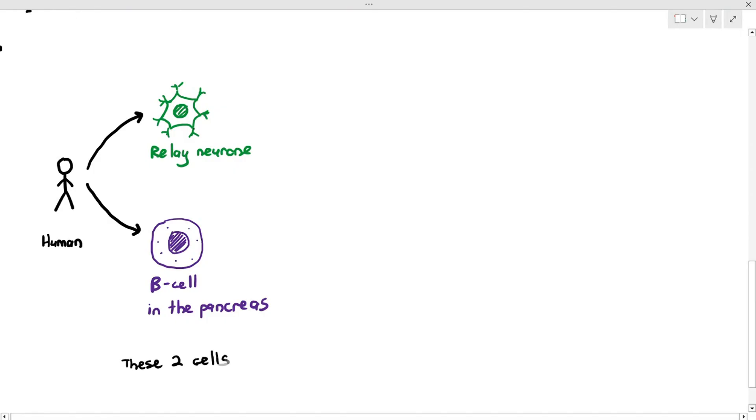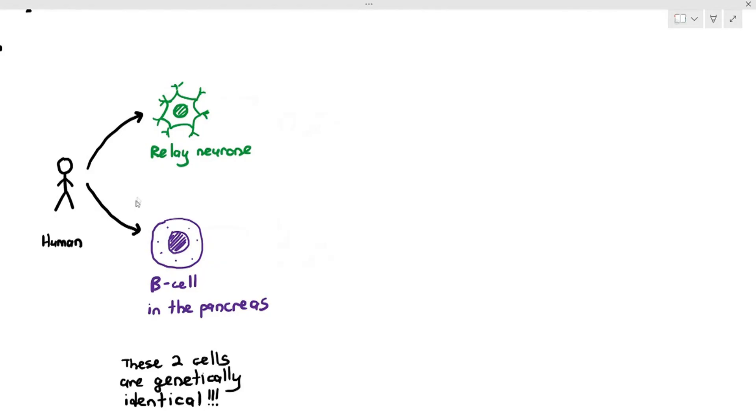But here's the thing, they are actually identical to each other. These two cells are genetically identical, which means to say any genes that are found in the relay neuron are also found in the beta cell in the pancreas. As an example, I'm taking out a chromosome here, where the relay neuron has an insulin gene, and the beta cell in the pancreas also has an insulin gene, by the way.